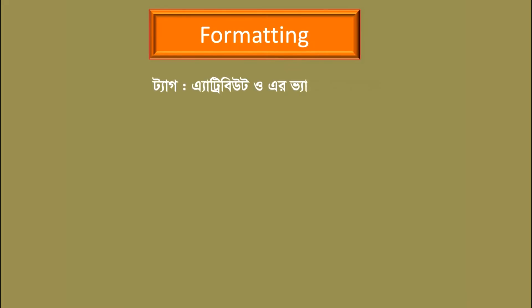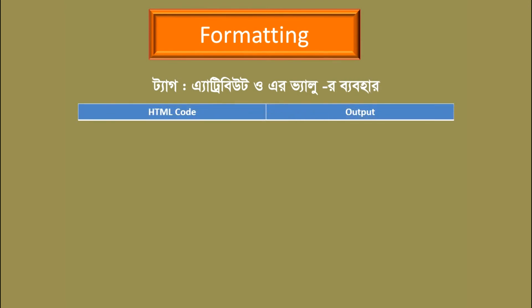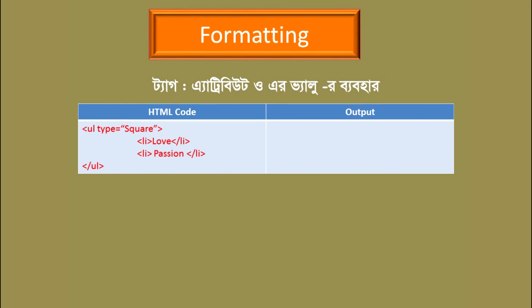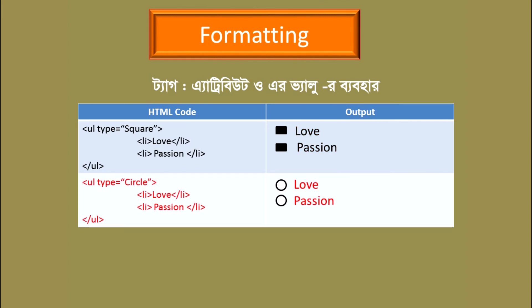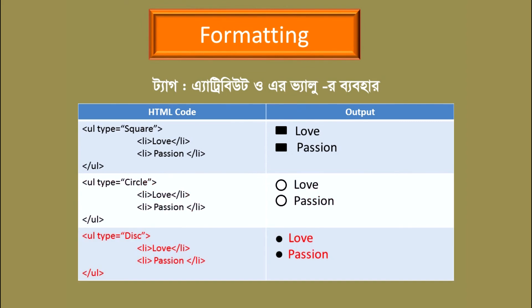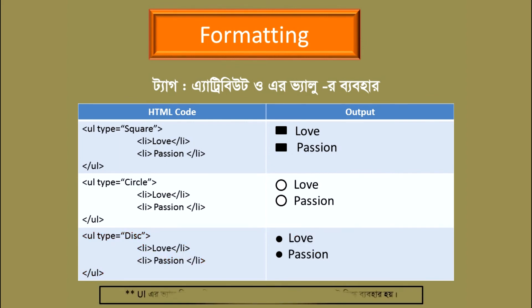As you can see, the attribute values are very important. If the type is square, you can see a square bullet displayed. The square type gives a square shape. If there is no value, the square gives no value.